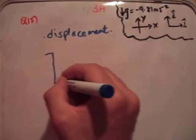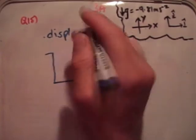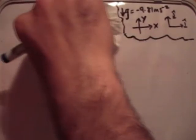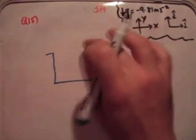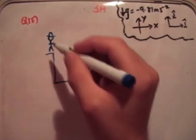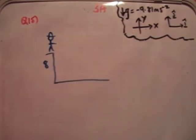So imagine that this diagram here represents a cliff and I'm just going to get rid of the word displacement. And say that there is a person standing on the top of the cliff here and say the cliff is 8 metres tall. Not much of a cliff but anyway.